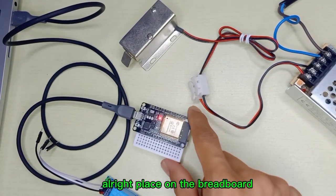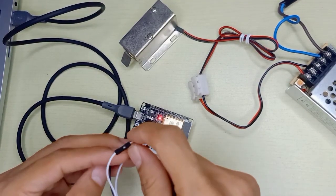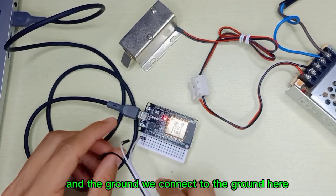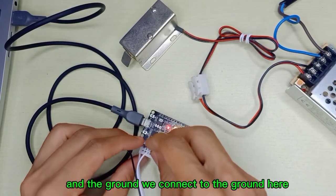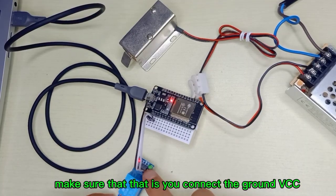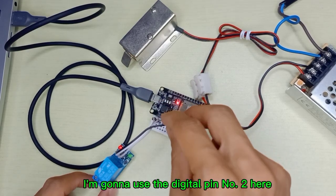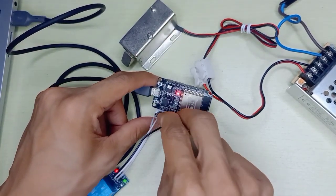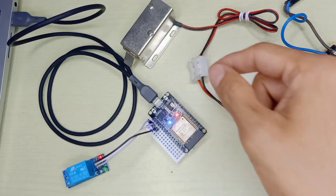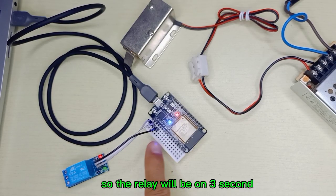According to my code, VCC we connect to 3.3 volt here and the ground we connect to the ground here. Make sure that you connect the ground and VCC. And this IN, I'm going to use the digital pin number two here. You can use another pin. Reset. So the relay will be on for 3 seconds.